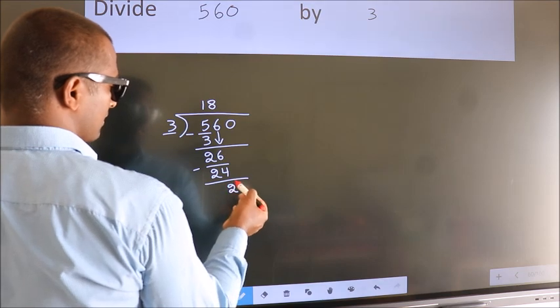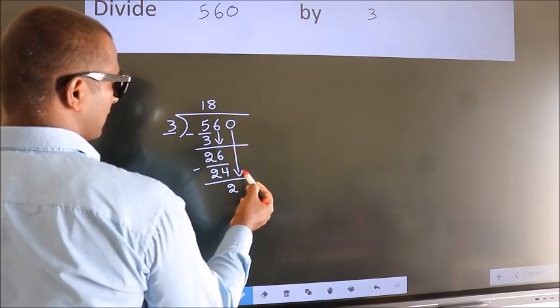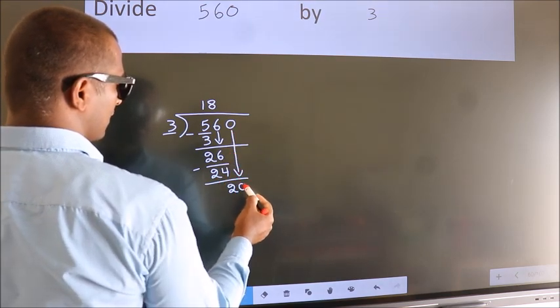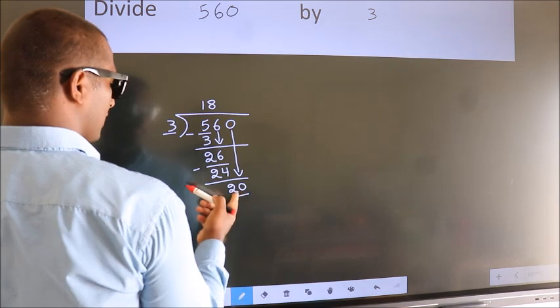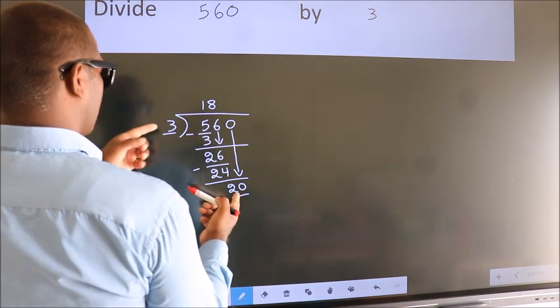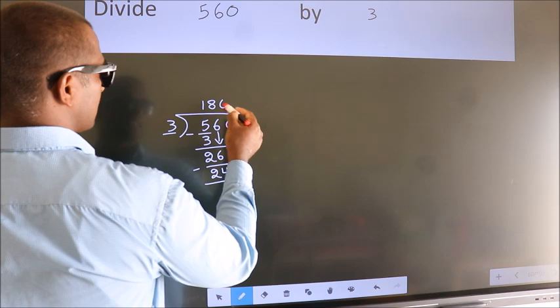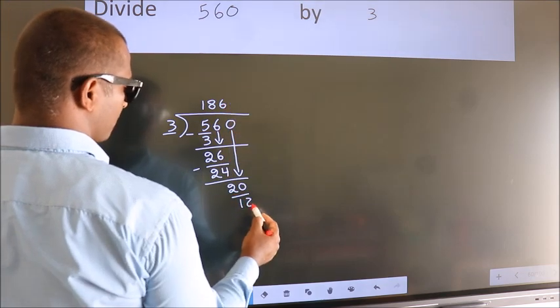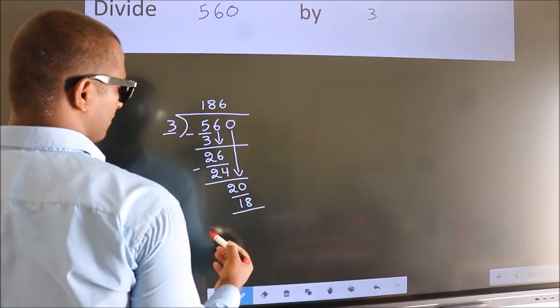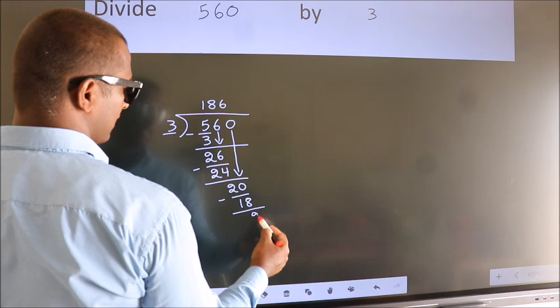After this, bring down the beside number. So 0 down. So 20. A number close to 20 in 3 table is 3 times 6, 18. Now we subtract. We get 2.